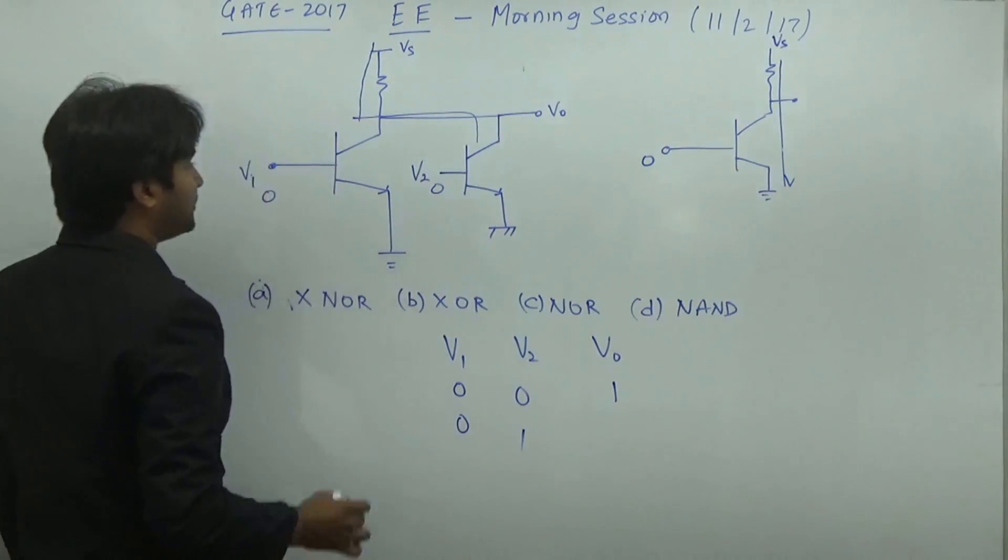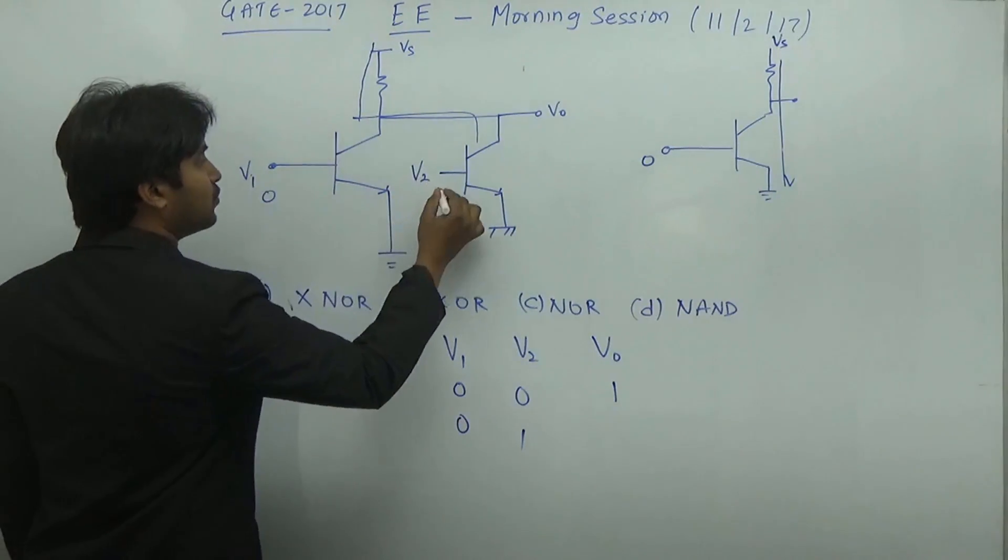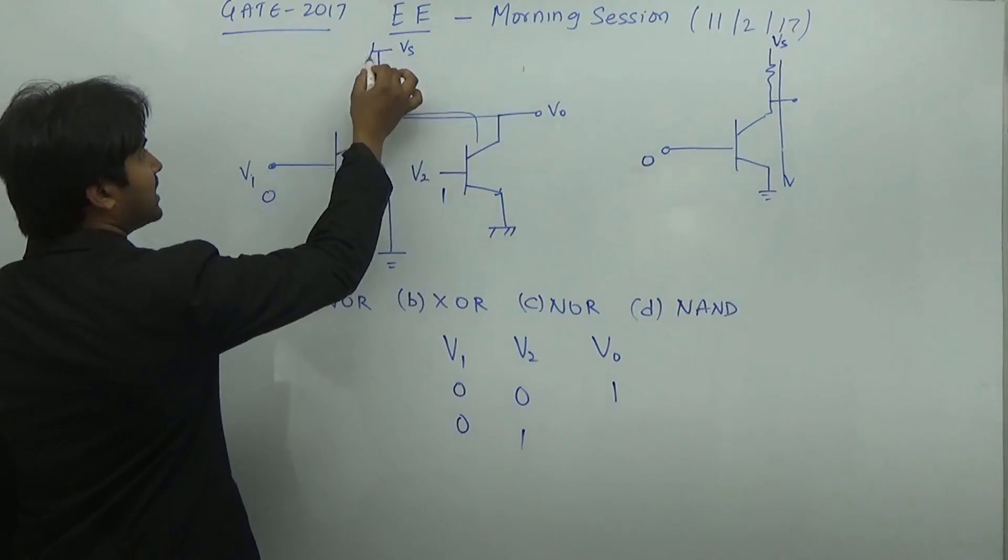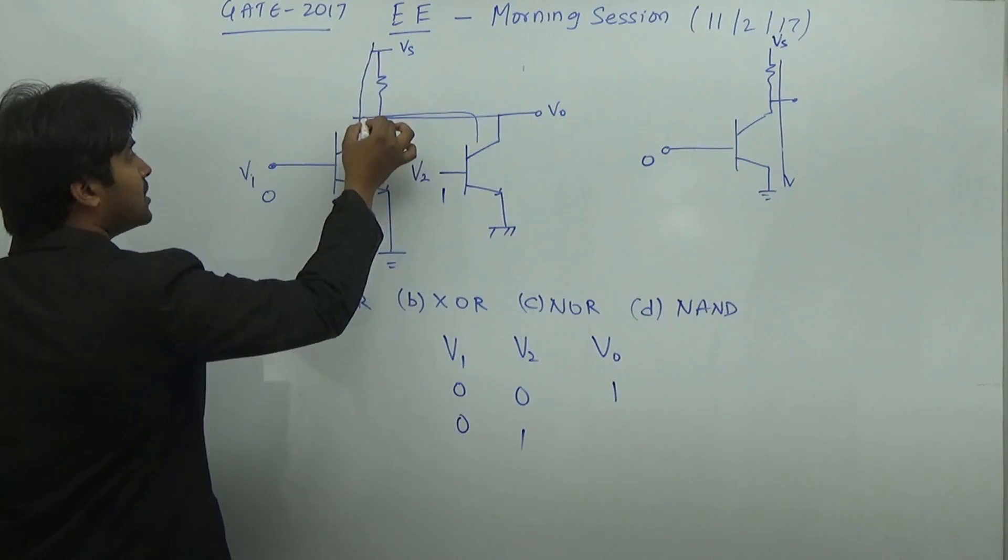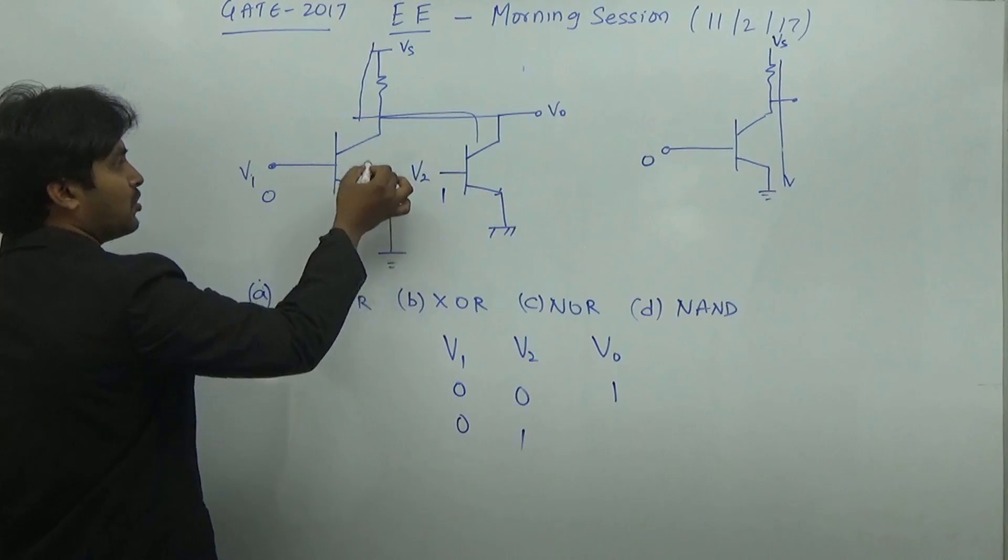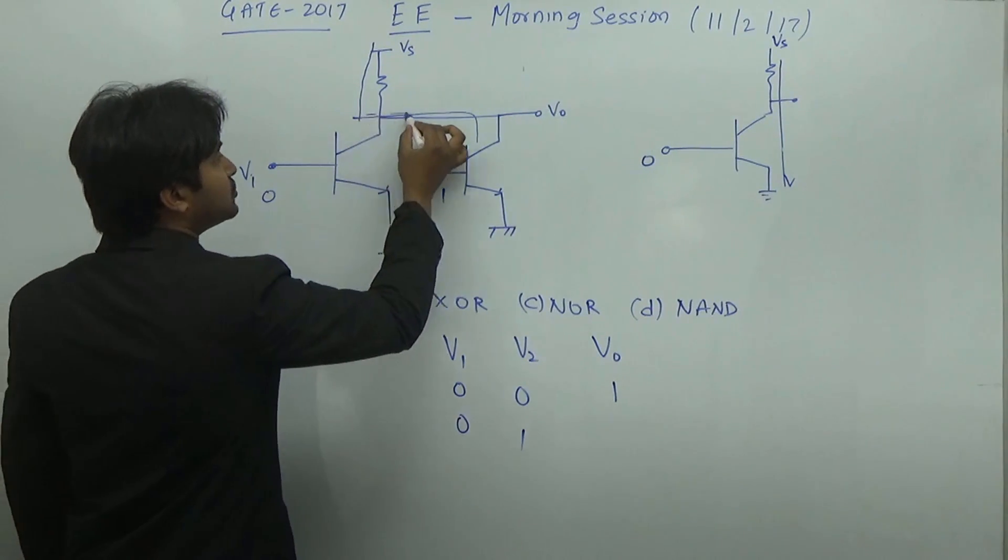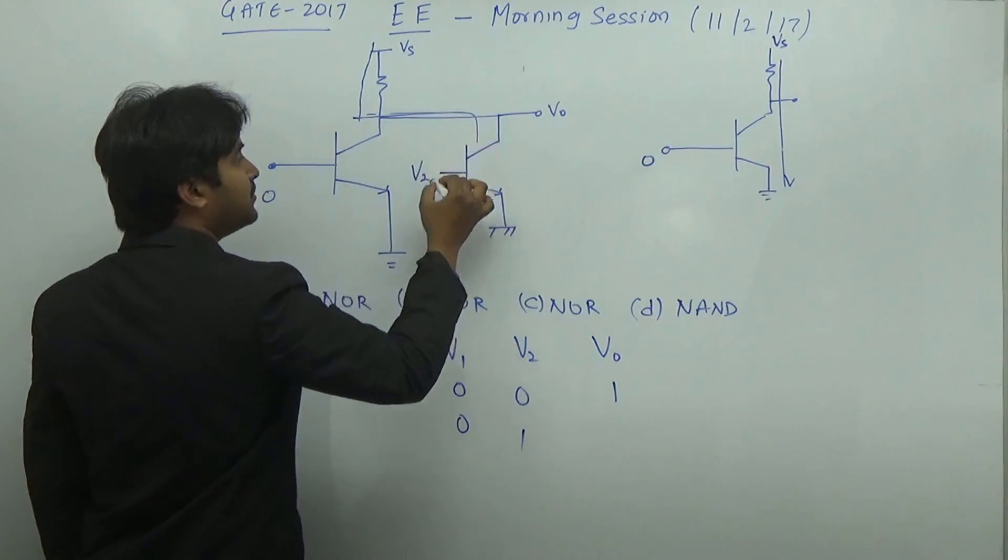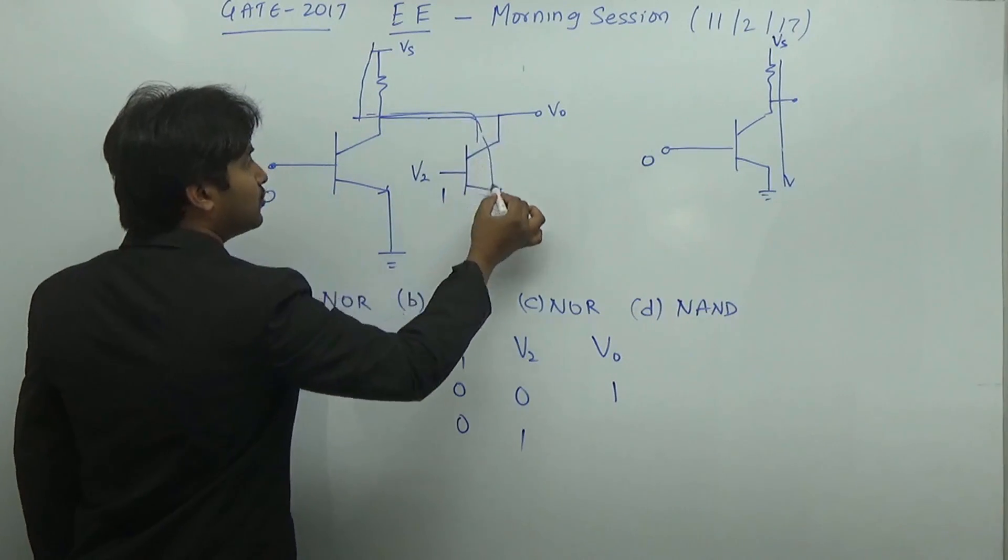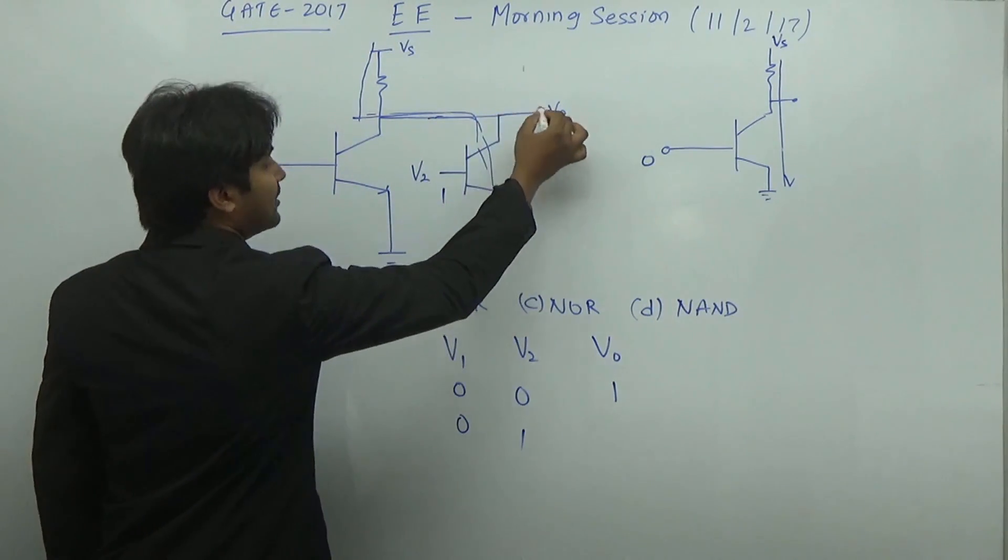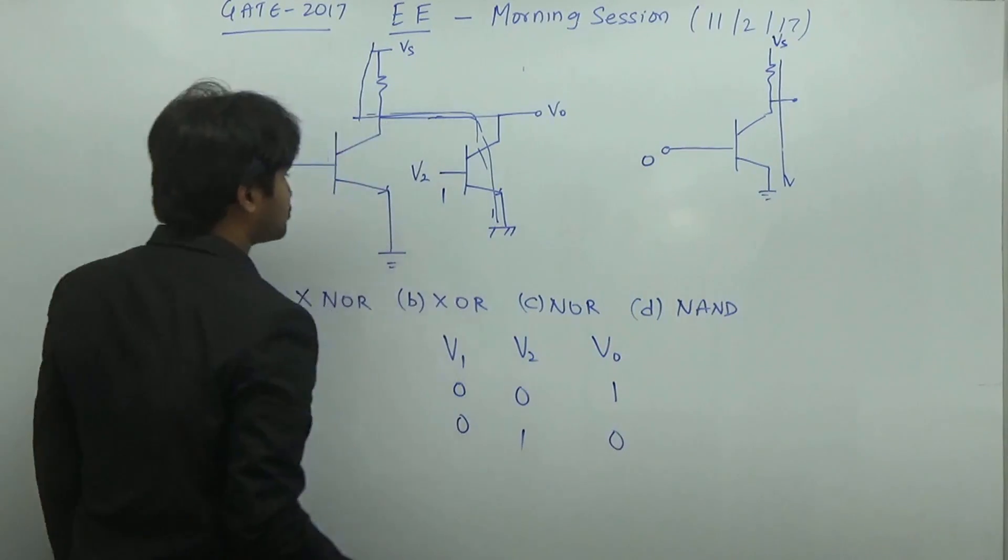When it is 0, 1, it means here it is 0 and here it is 1 volt. Whatever voltage is flowing through VS cannot flow through this BJT because it is in off state, so it has to flow through this one. Because it is in on state, it flows through this. When it flows through, there is no voltage available here, so the output voltage is equal to 0.